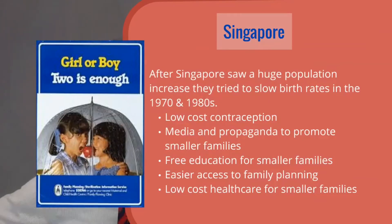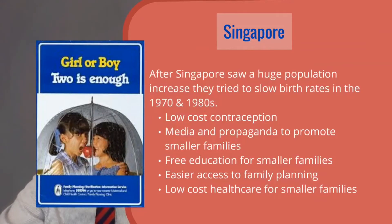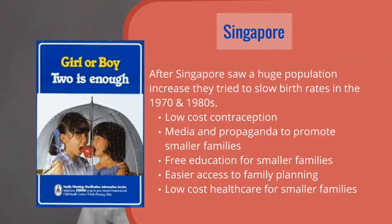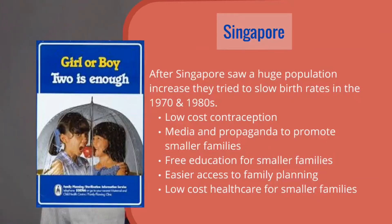When Singapore was slowing birth rates, they offered low-cost contraceptives — giving people cheap access to contraception to stop them from having children. They also used media and propaganda to promote smaller family sizes, showing families with one or two children as happier. They gave free education for smaller families, easier access to family planning centers, and low-cost healthcare for smaller families — if you had a smaller family, your healthcare would be covered by the government.